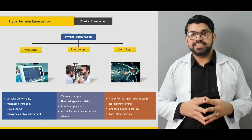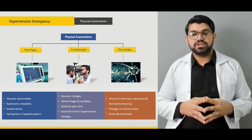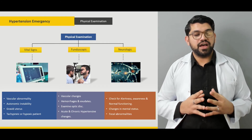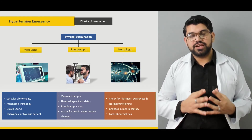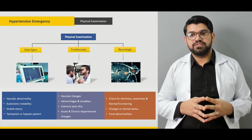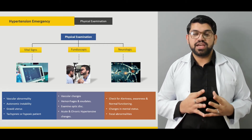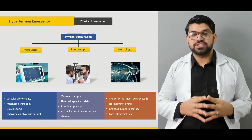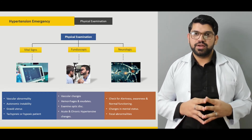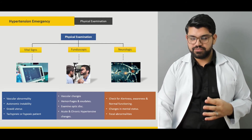Next will be the physical examination. What are the vital signs? What are the fundoscopic examinations to be done? What are the eye findings that can help you differentiate in chronic or acute hypertensive emergencies? What are the neurological symptoms or signs that could be appreciated on physical examination to help make a diagnosis of acute hypertensive emergency?